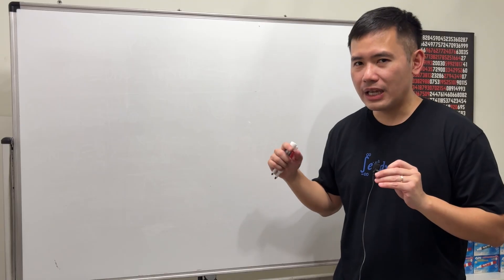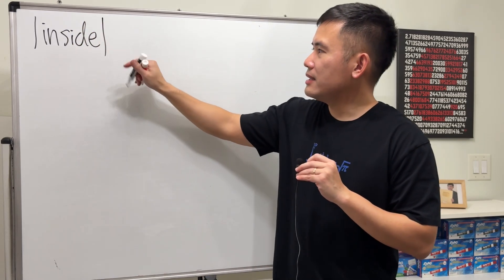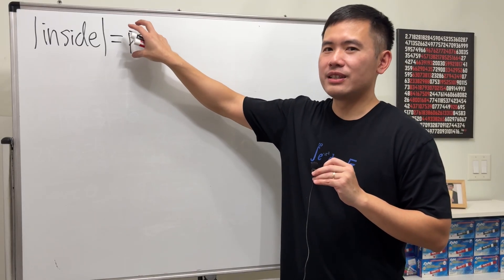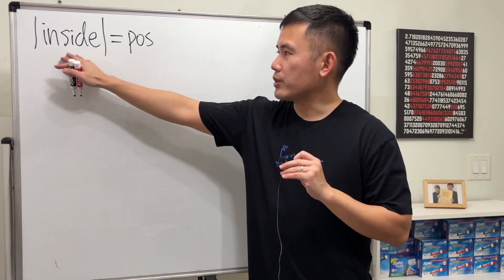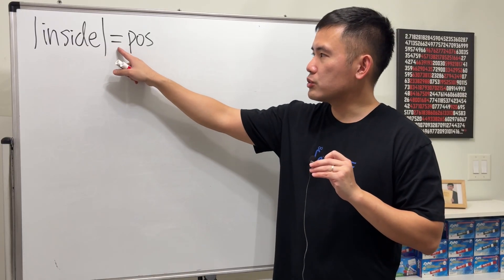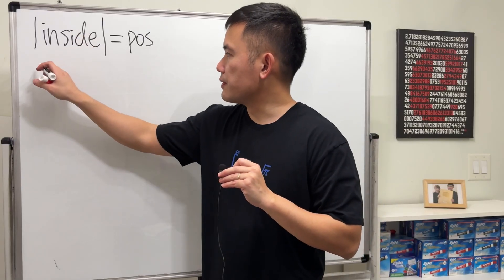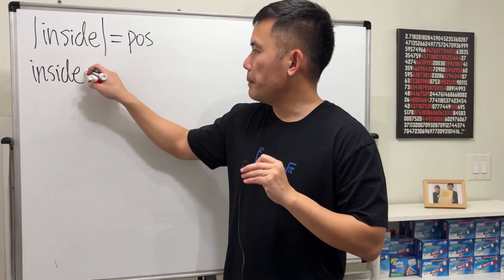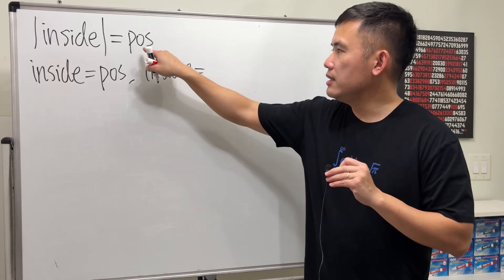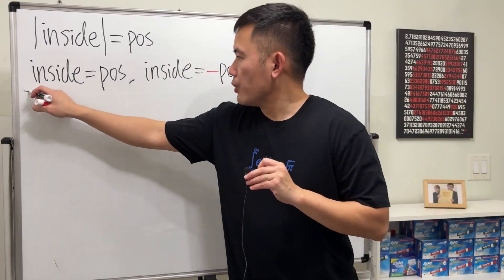Here's the summary that will make everything clear. We must have the absolute value with x on the inside, and the right-hand side must be a positive number. Once you have this form, you get two equations. The first is: solve the inside equal to that positive number. The second is: solve the inside equal to the negative of that same number.